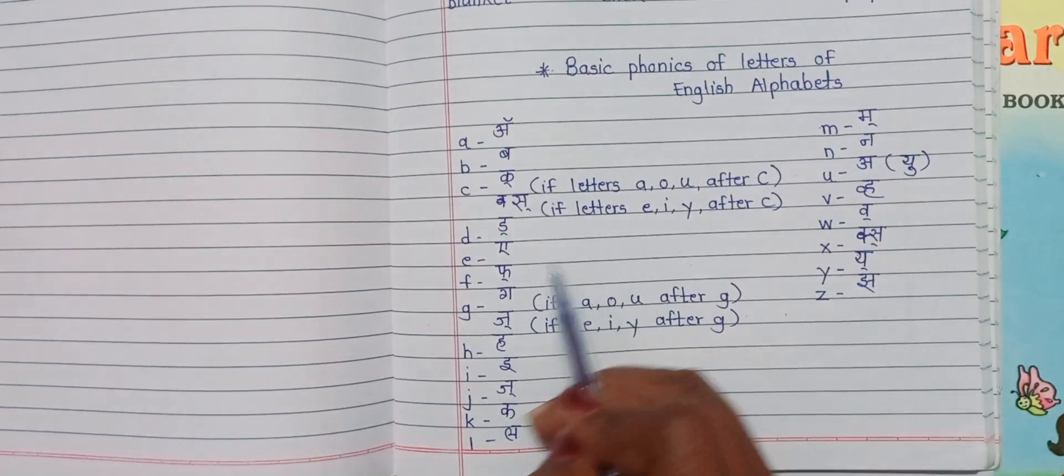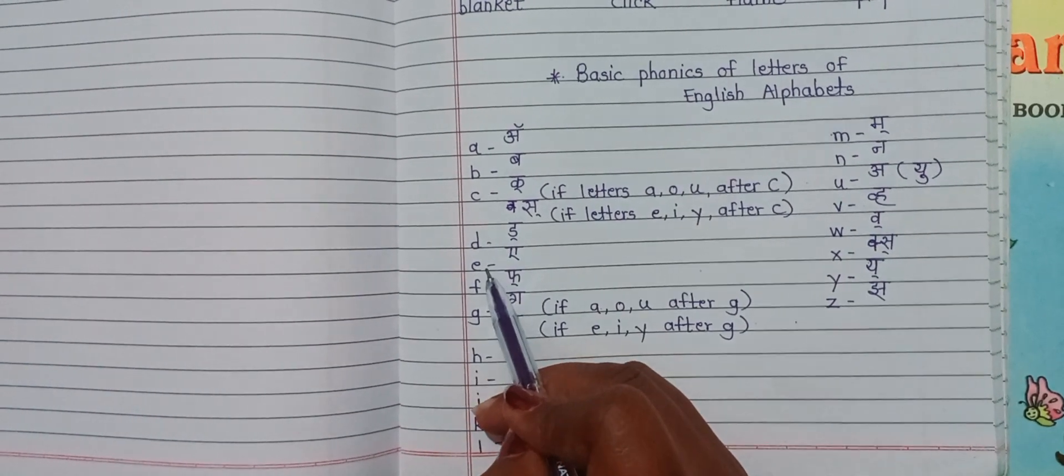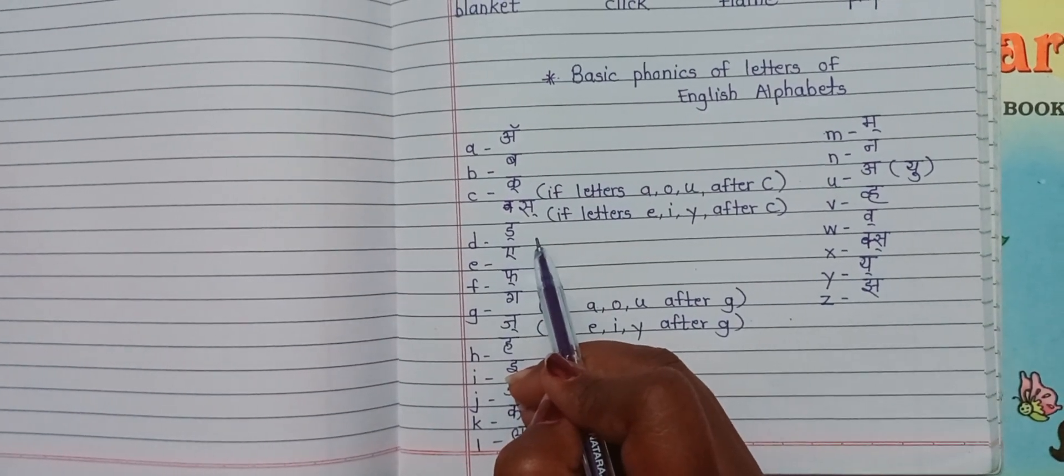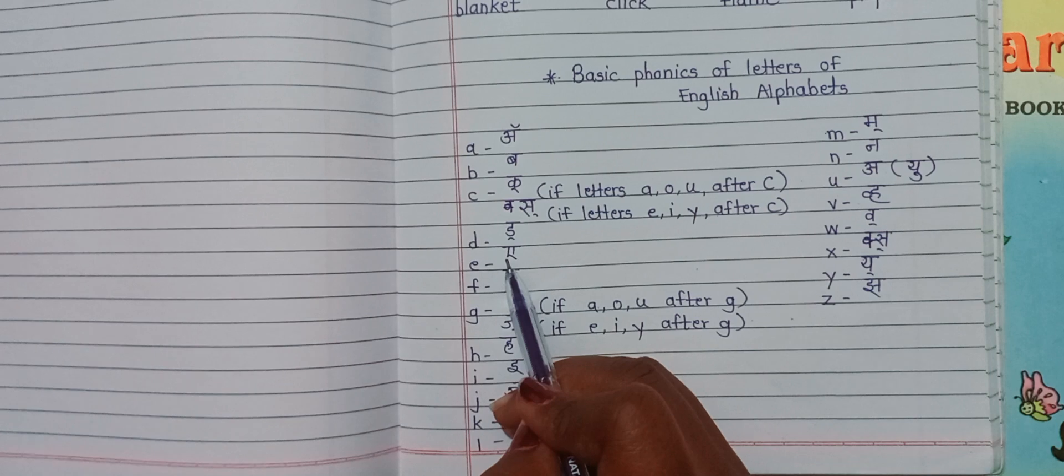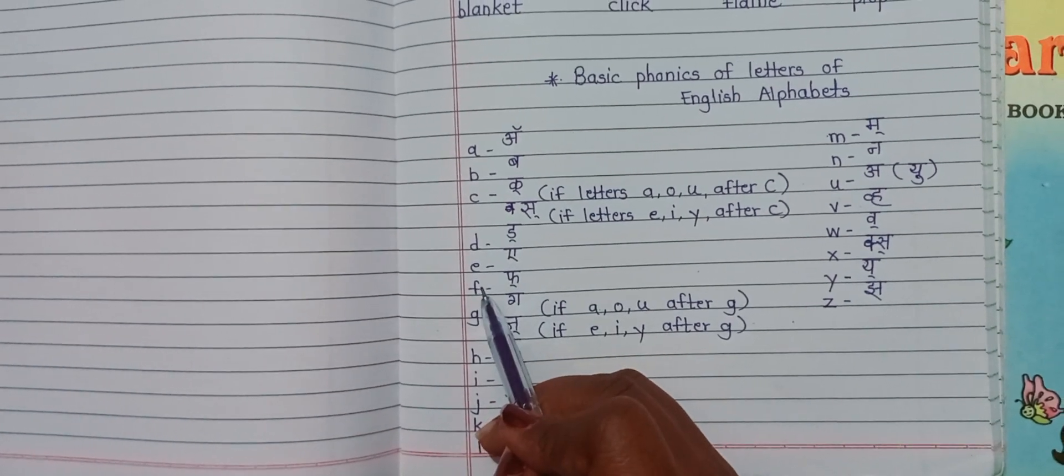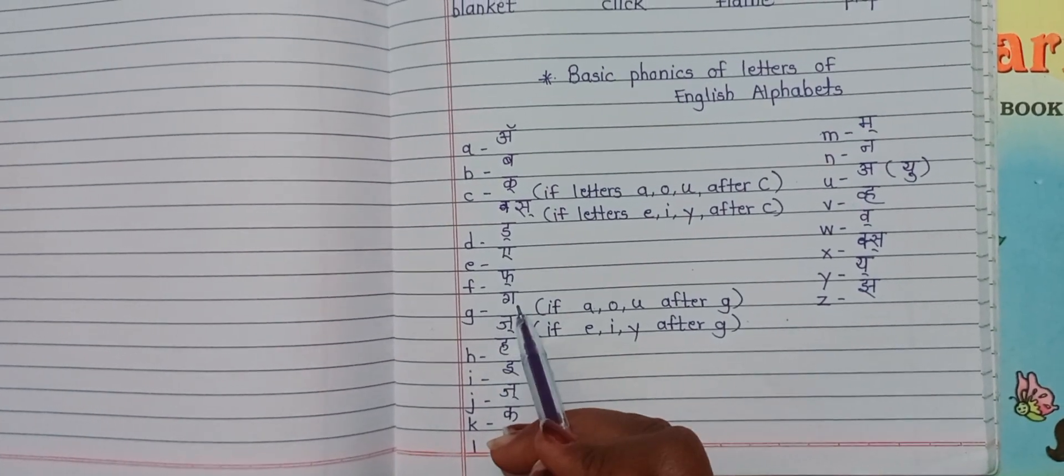D says D, duck, doll. E says A, F says F, G says G,